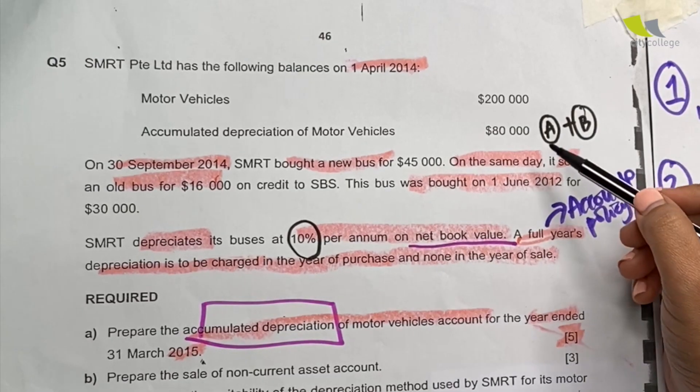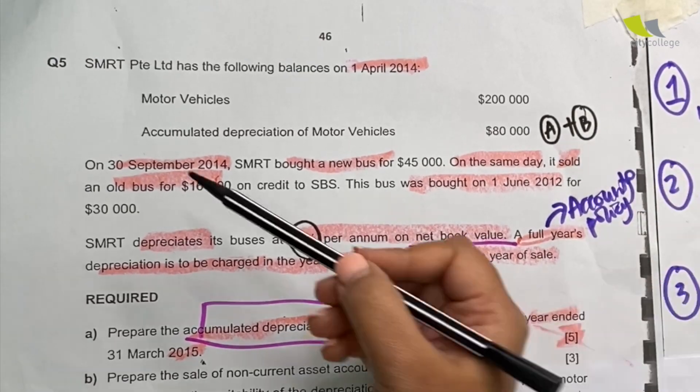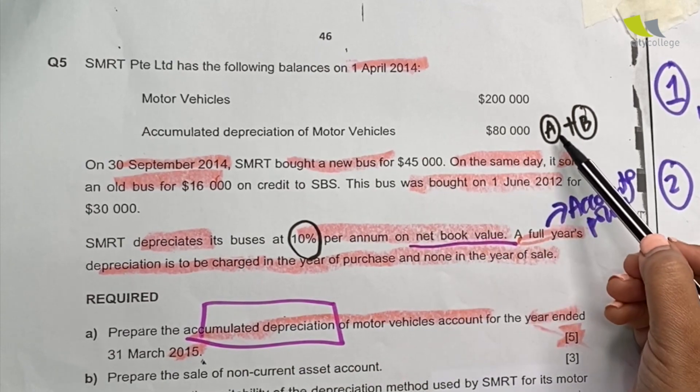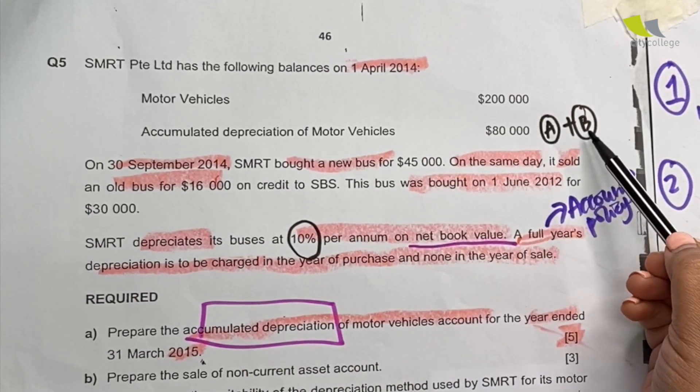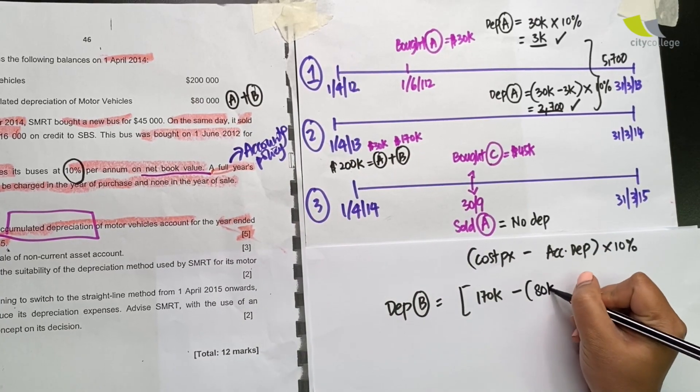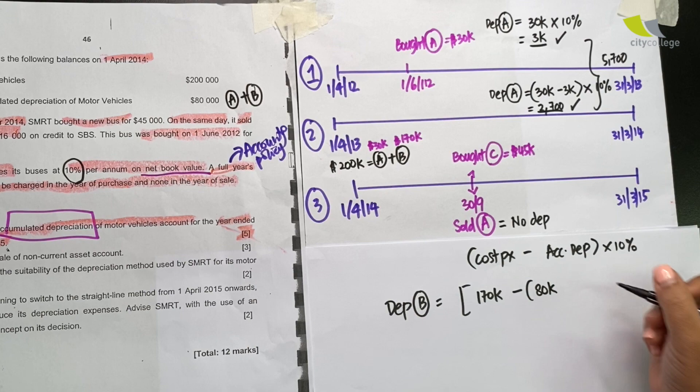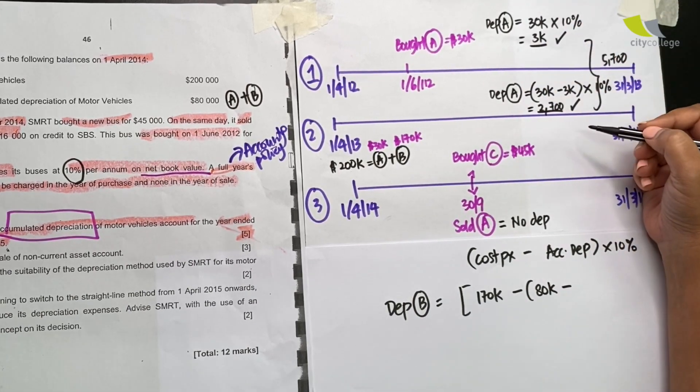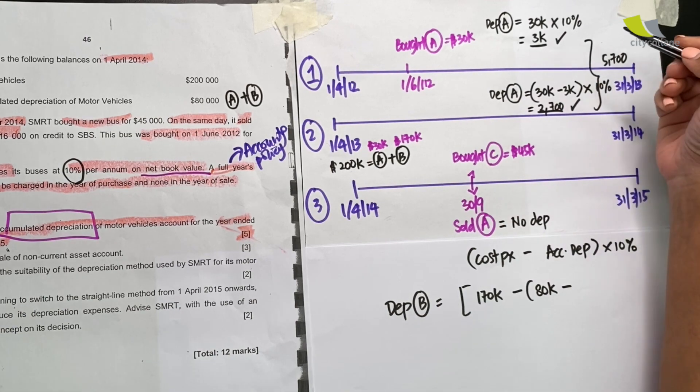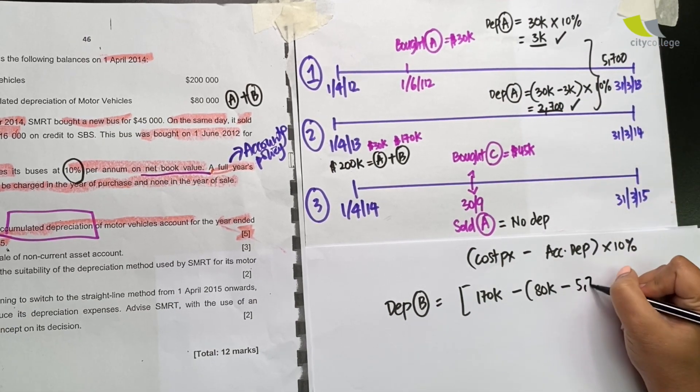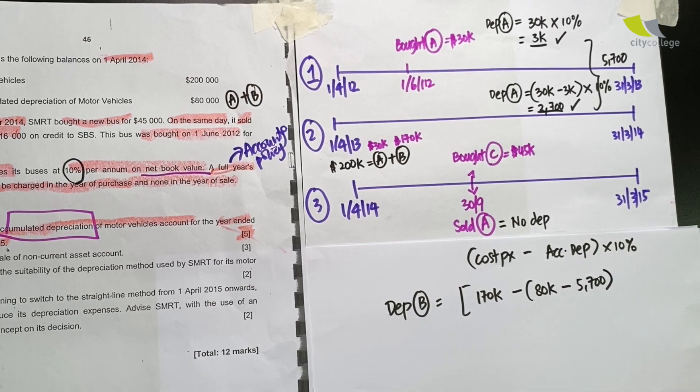What is the accumulated depreciation of B? Let's look at what information we have. The question says that the accumulated depreciation of $80,000 is actually for A and B added together. So if I take $80,000 which is for A and B added together and I minus off the depreciation, the accumulated depreciation for A which is actually $5,700 for the two years, I actually get the accumulated depreciation for B.